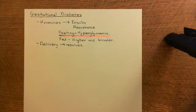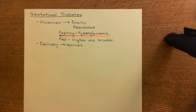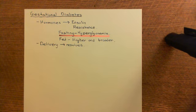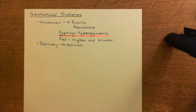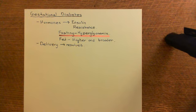Those are the different forms of diabetes discussed in this video. In the next video we will discuss the symptoms that hyperglycemia presents with, which are common to all these forms of diabetes. Then we'll move on to acute complications — diabetic ketoacidosis, hyperosmolar hyperglycemic state, hypoglycemia — then chronic complications including macrovascular and microvascular disease, and finally the anti-diabetic drugs.